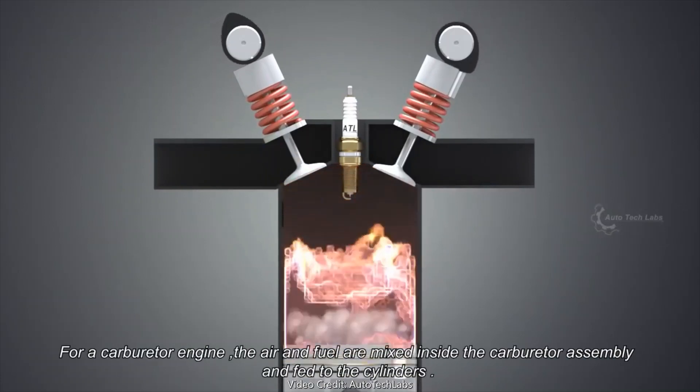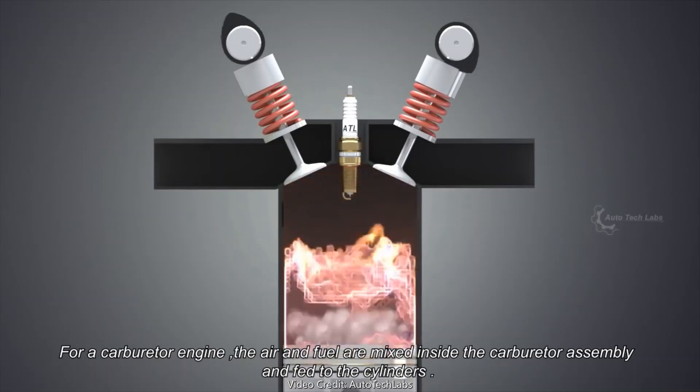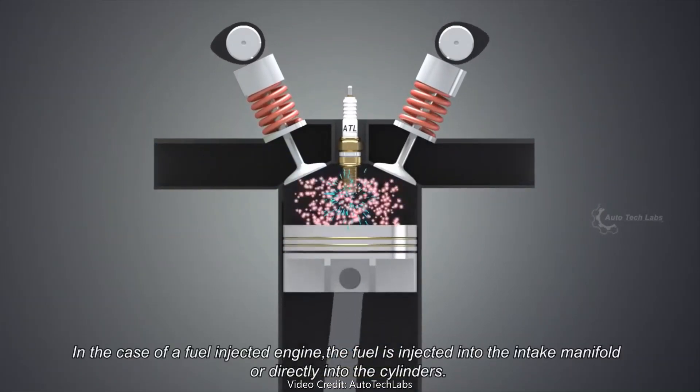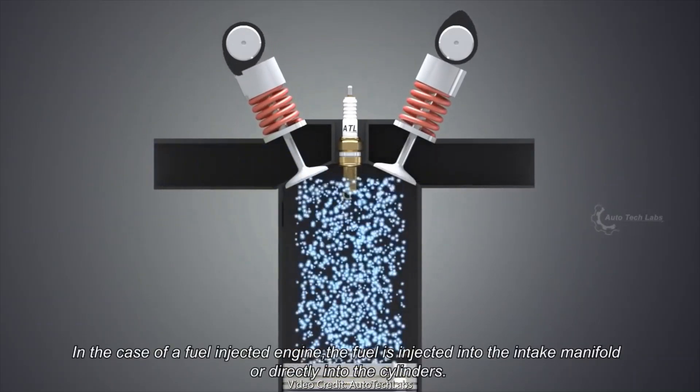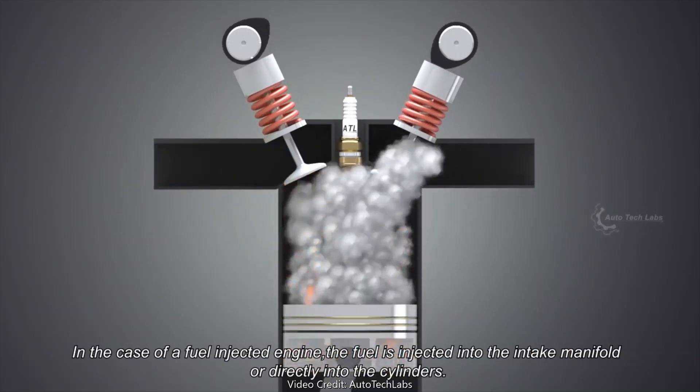For a carburetor engine, the air and fuel are mixed inside the carburetor assembly and fed to the cylinders. In the case of a fuel-injected engine, the fuel is injected into the intake manifold or directly into the cylinders.